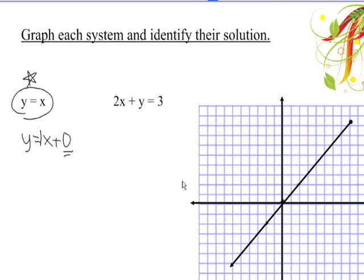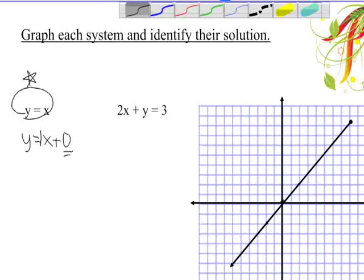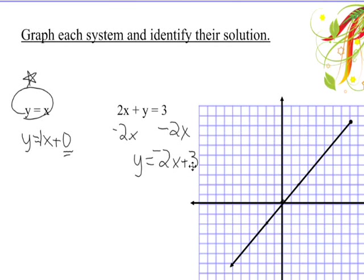The second one is 2x plus y equals 3. We do want to solve for y. If we move the 2x over, minus 2x, we get y equals negative 2x plus 3. Our y-intercept is going to be 3, and our slope is negative 2.